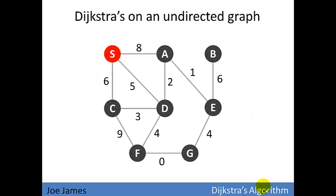So let's take a look at an undirected graph. This is the example we'll use. We've picked a source vertex in the top left corner. We're going to run Dijkstra's algorithm on this undirected graph. We'll find the shortest path from S to every other vertex in the graph.